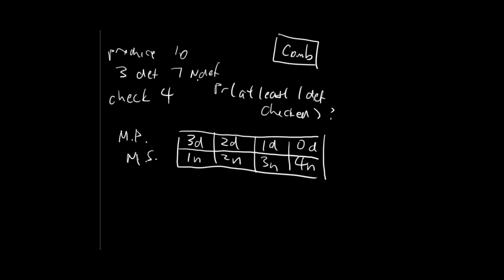So now we think, okay, we need at least one defective. So this is at least one defective, this is at least one defective, this is at least one defective, and this is not.